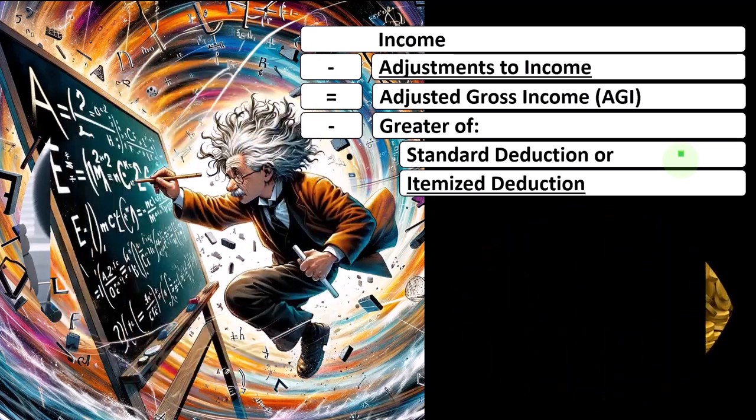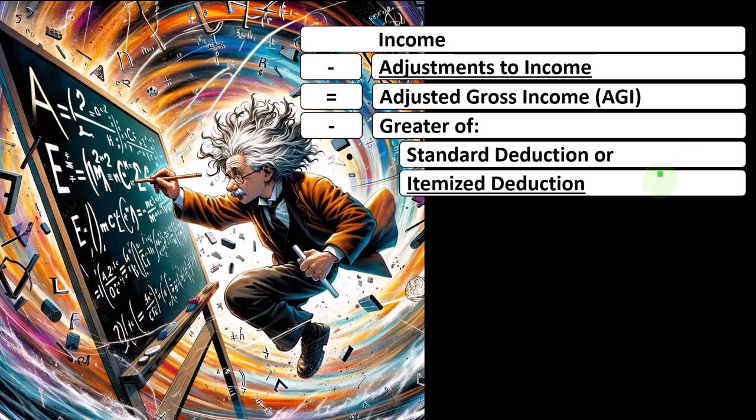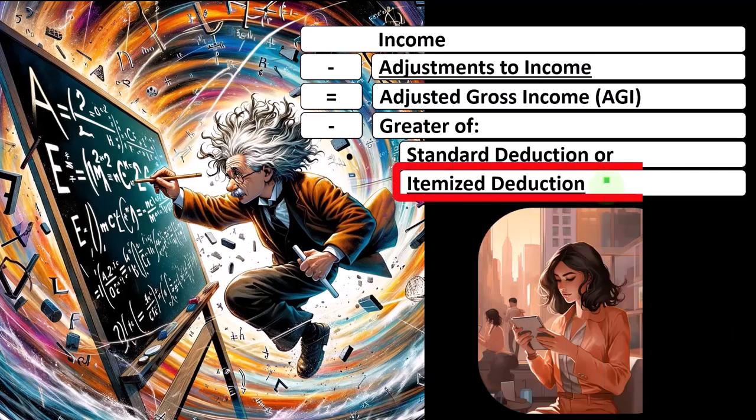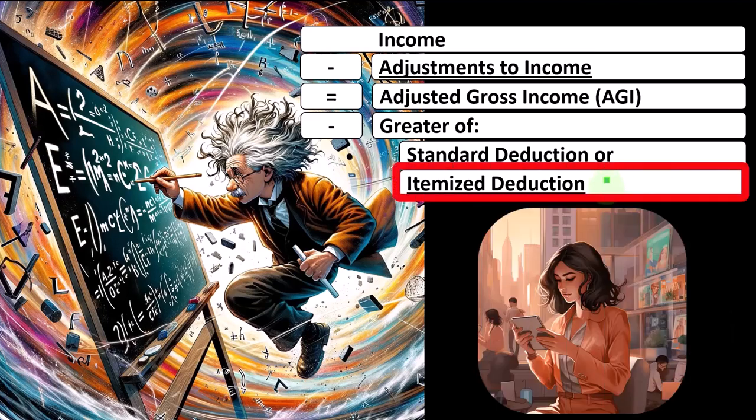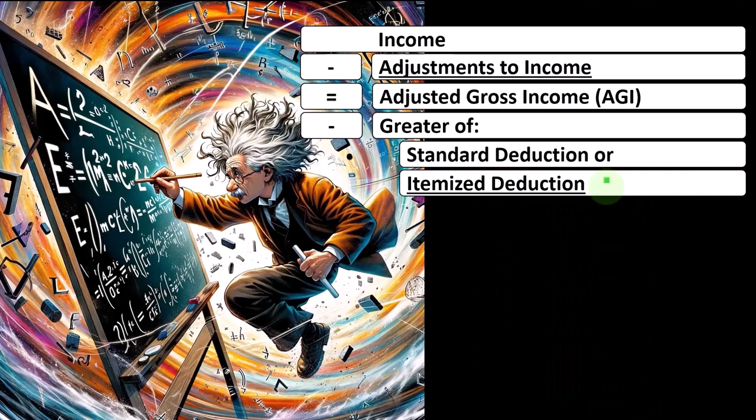One idea to simplify the tax code would be to stop doing so much of this itemized deduction business, because the people that itemize are usually the more wealthy individuals who have these other categories of deductions that we're trying to incentivize, but are kind of outside the normal deductions.